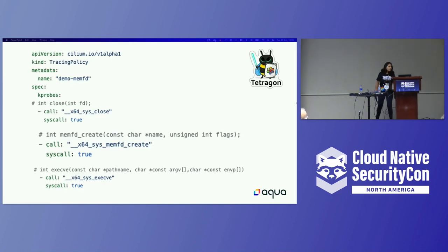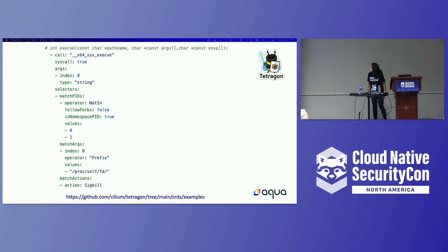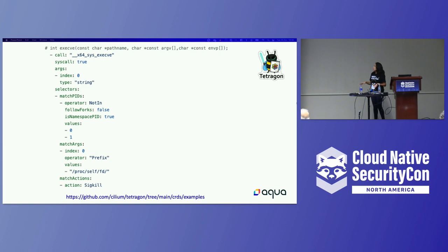The tracing policy is a Custom Resource Definition. In this case, because I am trying to look at the memfd_create syscall, I define it in the rule: if some syscall is memfd_create, and also another syscall, sys_close. The main point of this rule is the signal kill feature — after finding memfd_create and then the execution via execvbe, when it notices this ordering and match of memfd_create and execution, it will kill the process when it matches the proc filesystem file descriptor path.